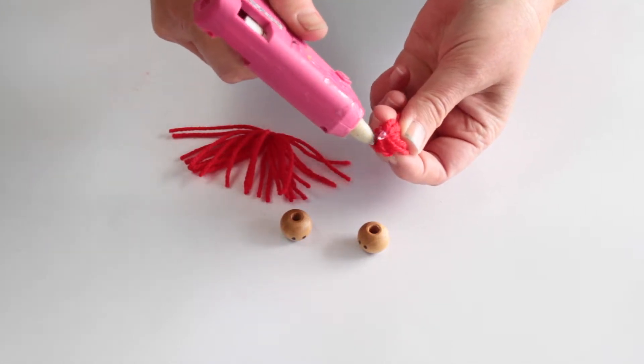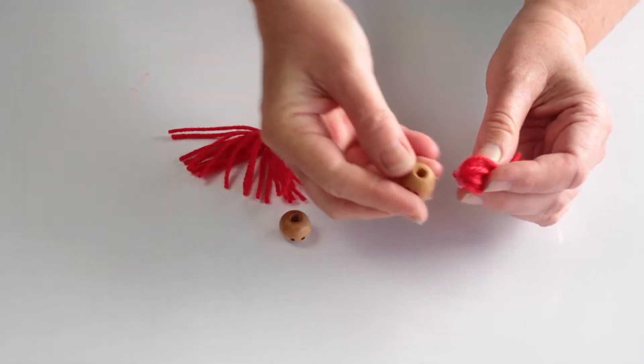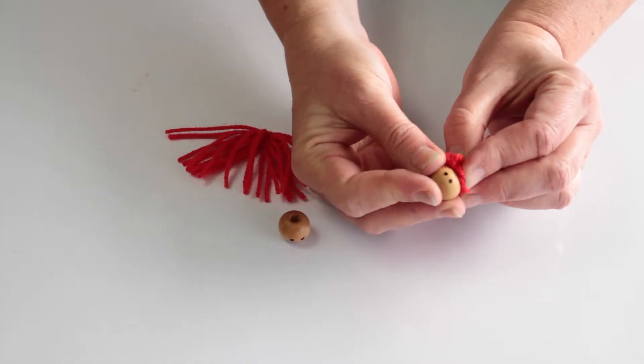Using the hot glue gun, place a dab of glue onto the knot of the hair and push it onto the top of the bead.